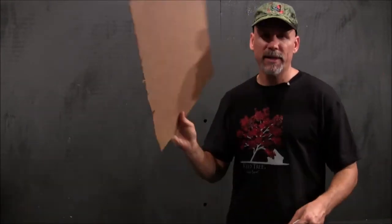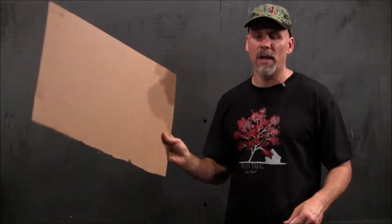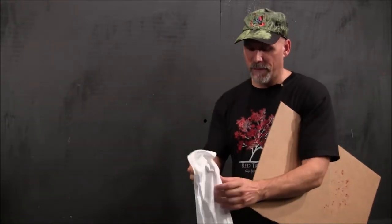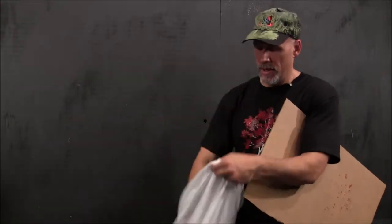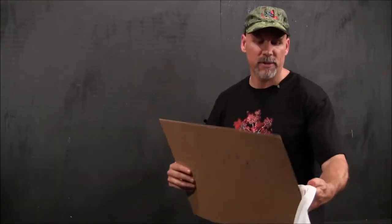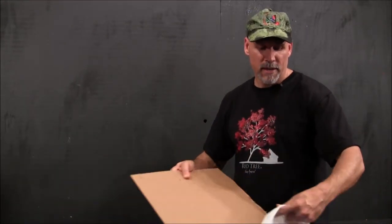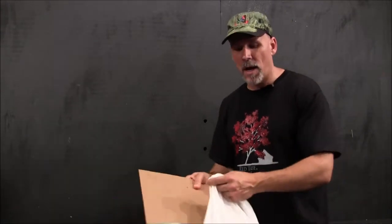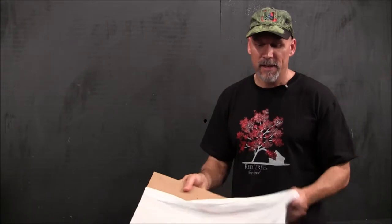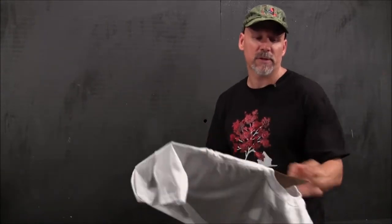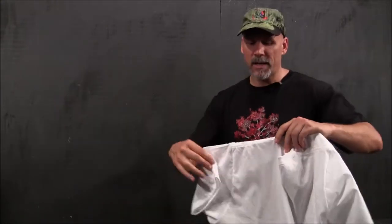So what you're going to do first is once you get your shirt, you want to put your cardboard insert inside the shirt. And the reason you're doing that is because when you paint on the shirt, you don't want it to bleed through to the back. So you want to put your cardboard insert in there and just kind of cut it so that it fits going inside the t-shirt.